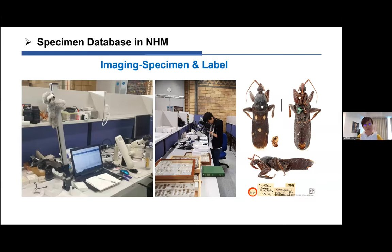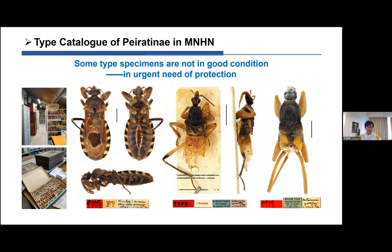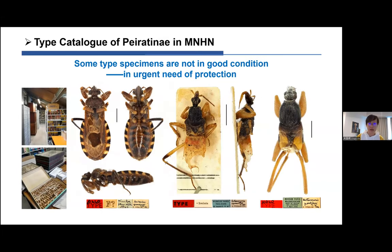It's a kind of protection for the specimens and provides more convenience to every researcher. In the Paris museum the situation is different — there are not as many journey-type specimens compared to London, but some specimens are not in very good condition and are in urgent need of protection. After my visit to Paris I decided to write a type catalog together with the curators.